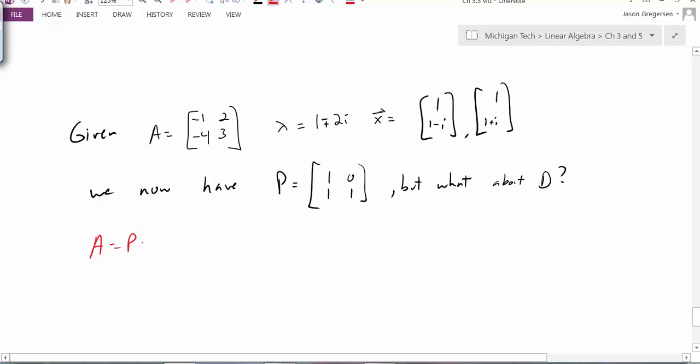Well, to figure out what this similar matrix has to be, I'm going to write the similarity transform. I have A equal to P times some matrix times P inverse. But if I multiply on the left of both of the sides by P inverse, I would be left with P inverse times A equals D times P inverse.